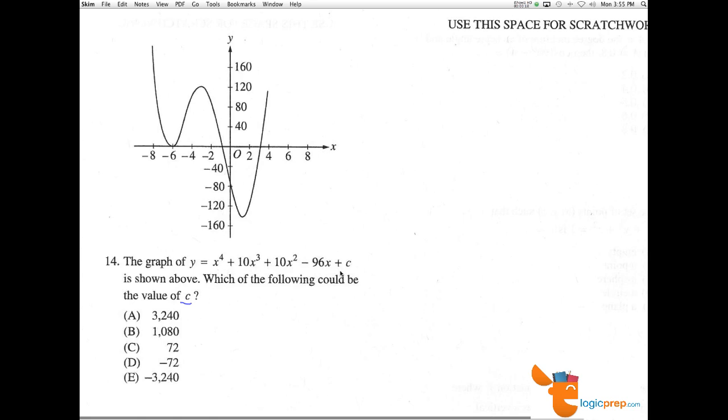Now with any polynomial, the value that doesn't have x next to it, the final value, will always be the y-intercept. Why will it be the y-intercept? Because when we hit the y-axis, the value here of x is always equal to 0.